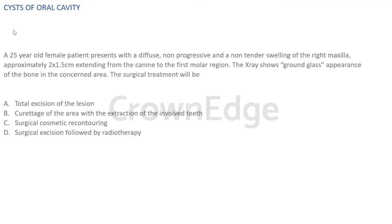This is a clinical scenario with radiographic interpretation. It's a diffuse swelling — not a properly circumscribed lesion — and it's non-progressive and non-tender. The swelling is in the right maxilla, in the canine to first molar region. The key features are: non-tender, diffuse, non-progressive swelling with ground glass appearance on X-ray. Most lesions have a pathognomonic feature, and this is ground glass appearance. Can anyone identify the lesion?